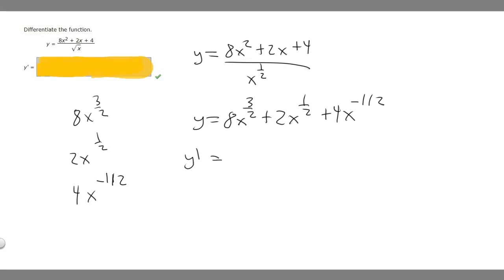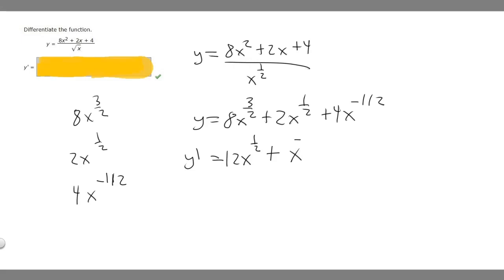So y prime, which is the derivative, equals the derivative of 8x to the 3 over 2. We multiply 3 over 2 times 8: 8 times 3 is 24, divided by 2 is 12. So our coefficient is 12, and we subtract 1 from 3 over 2 to get 1 half — giving us 12x to the 1 half. For 2x to the 1 half, we multiply 1 half by 2, which gives us 1, and the new exponent is 1 half minus 1, which is minus 1 half.